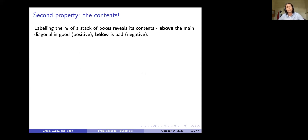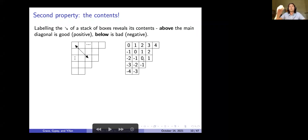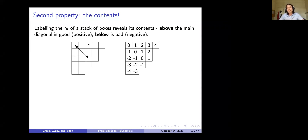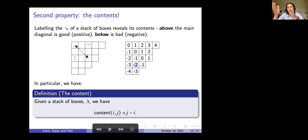The next property is contents. Labeling the diagonals of a stack of boxes reveals its contents. Above the main diagonal is positive, below is negative, and the main diagonal is zero. The next diagonal up is 1, then 2; going below gives −1, −2, and so on. For a specific box at index (4,2), the content is computed as j − i = 2 − 4 = −2.